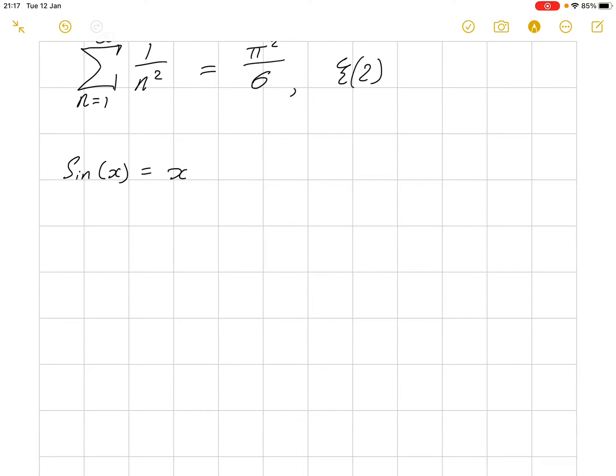We have x minus x cubed over 3 factorial plus x to the 5 over 5 factorial minus and so on and so forth. The first thing that we're going to do is divide by x.